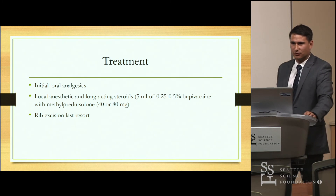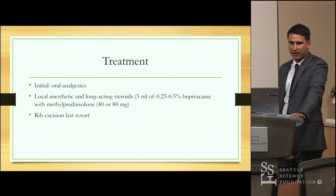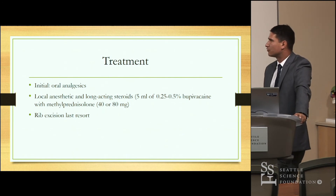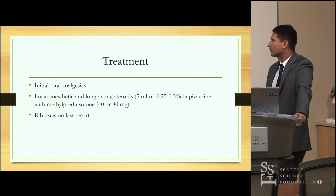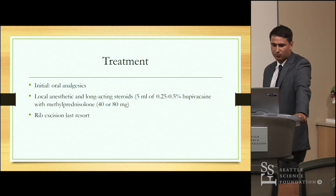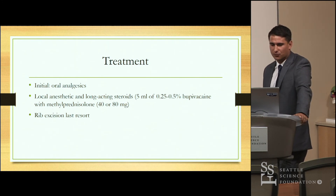For treatment options, you can initially try oral medications such as NSAIDs. Sometimes just letting the patient know the diagnosis — after ruling everything else out — will help them feel better. You can then try local anesthetics such as nerve blocks; most of the literature uses bupivacaine and methylprednisolone as the main medications for the injection. If all that is refractory, the last treatment option is rib excision. There was a case report of four patients who had rib excisions and had no more pain afterward, so this can be a last resort.